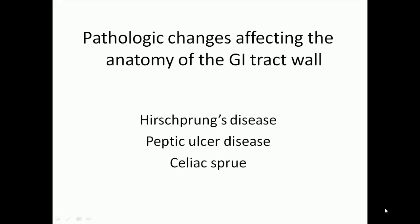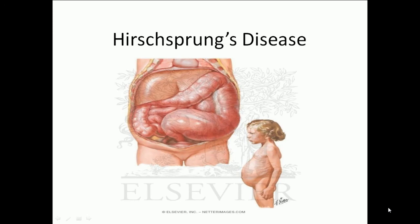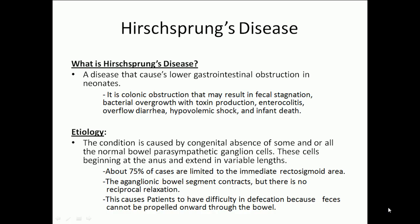Now that we know the normal anatomy of the GI tract wall, we will go on to discuss the pathologic changes affecting the anatomy of the GI tract that can result in disorders or diseases. Let's talk about Hirschsprung's disease. It's a disease that causes lower gastrointestinal obstruction in neonates.